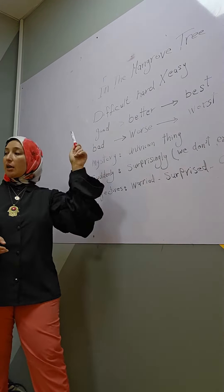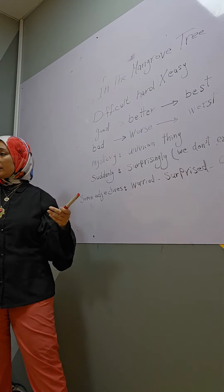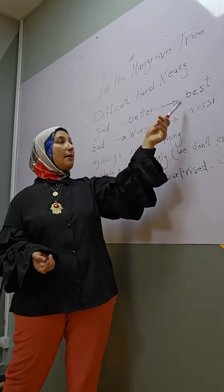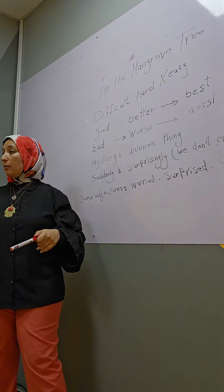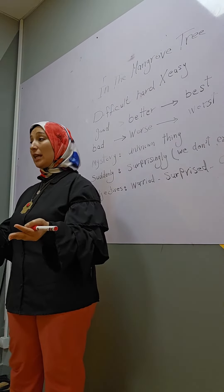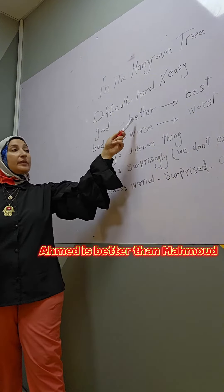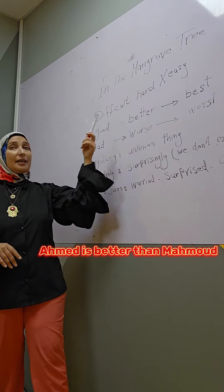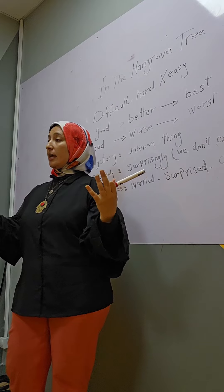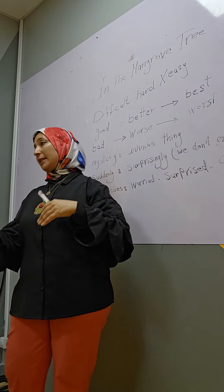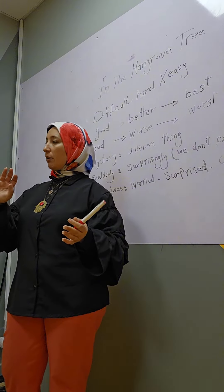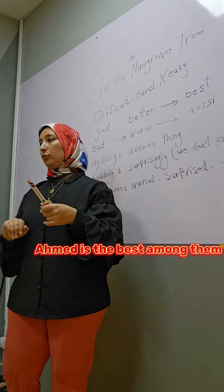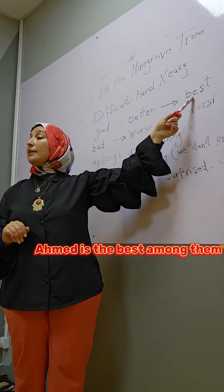When I use 'good' in a comparative, I say 'better,' and when I talk about the superlative, I say 'best.' For example, Ahmed is a good boy. But when I compare Ahmed with Mahmoud, I say Ahmed is better than Mahmoud. And when Ahmed is the best of all, that is the superlative.